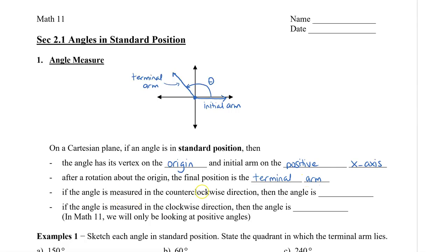Now if the angle is measured in the counterclockwise direction, such as I've drawn up here, then the angle is going to be positive. But if the angle is measured in the clockwise direction — so we start here and go clockwise — then the angle is going to be negative. Luckily, in Math 11, we're only going to be looking at positive angles.